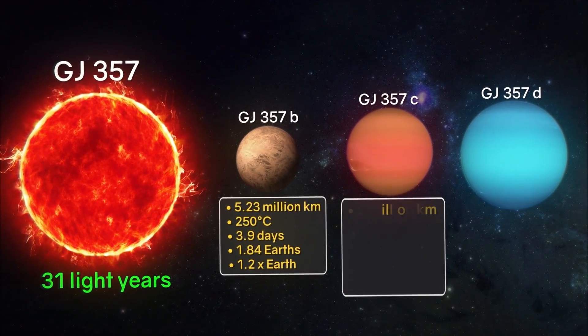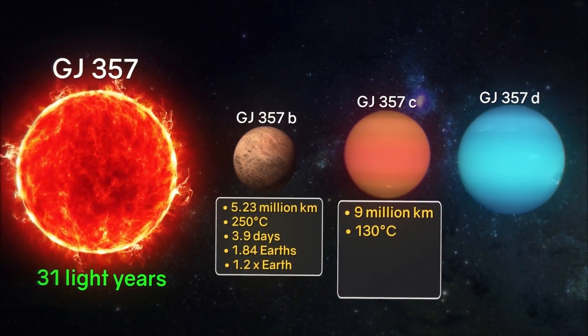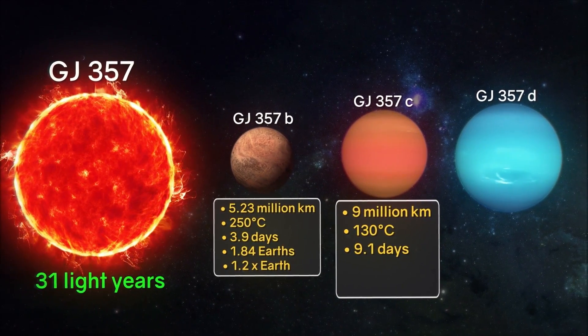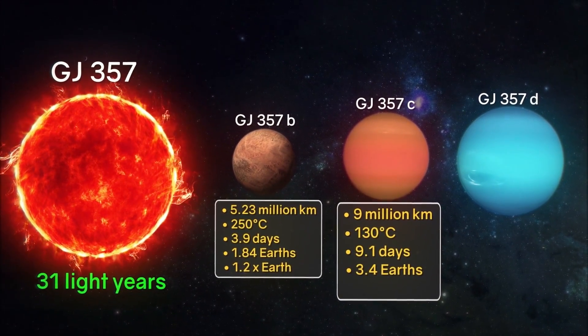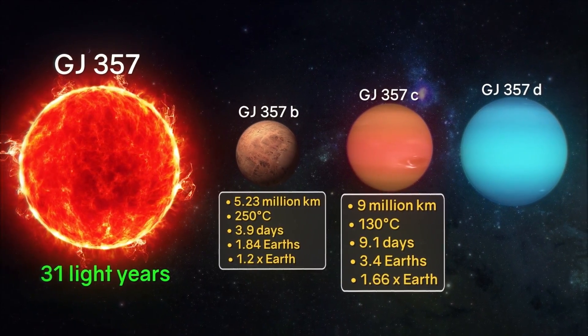GJ357c: The distance to the star is about 9 million kilometers. The average surface temperature is 130 degrees Celsius. The period of rotation around the star is 9.1 days. The mass is about 3.4 times that of the Earth. Size 1.66 times the size of the Earth.